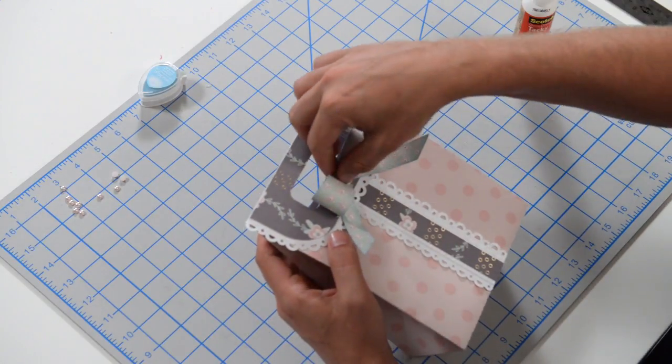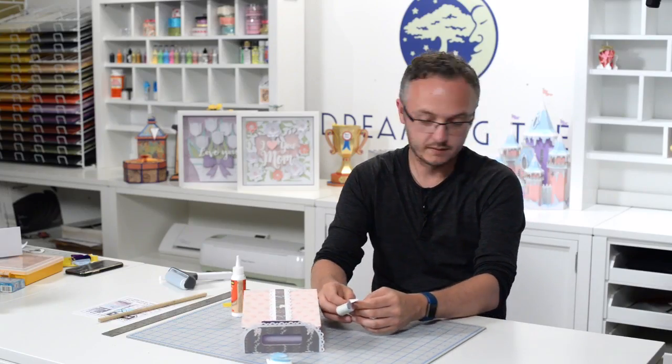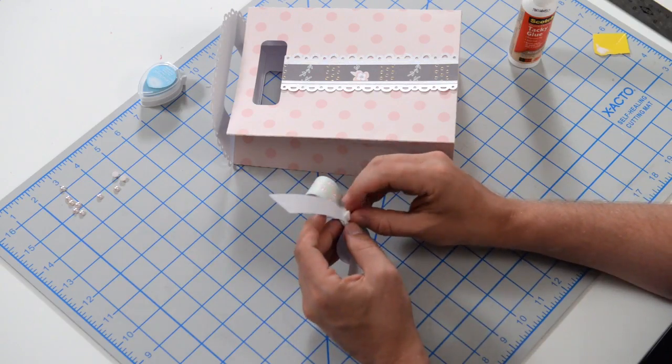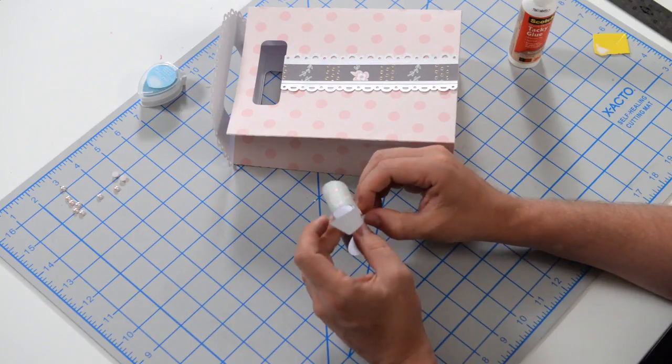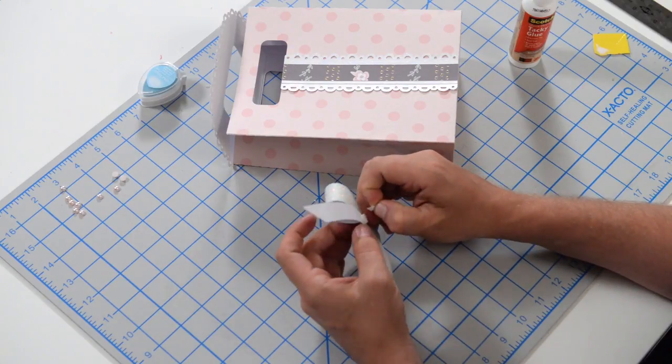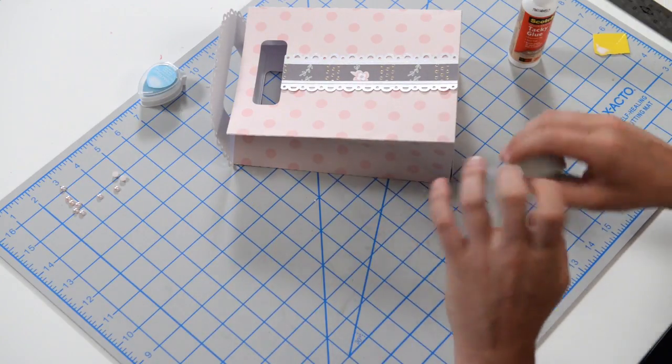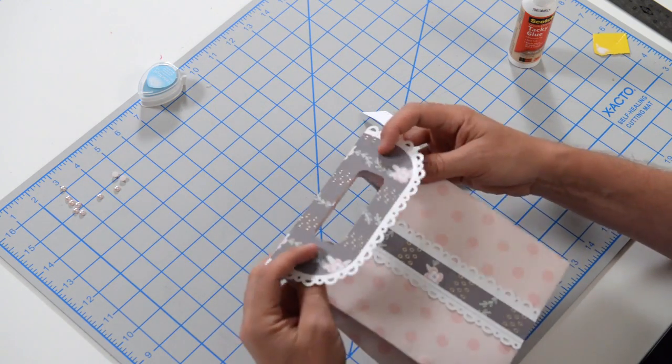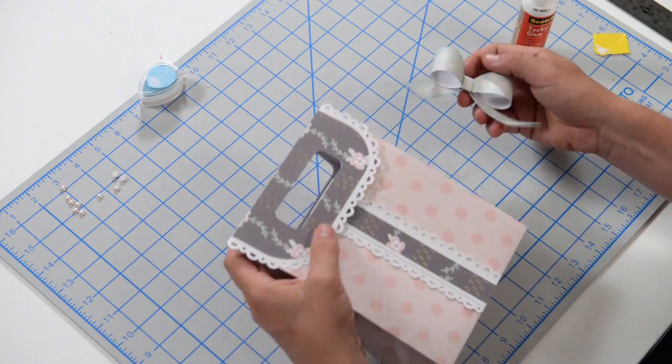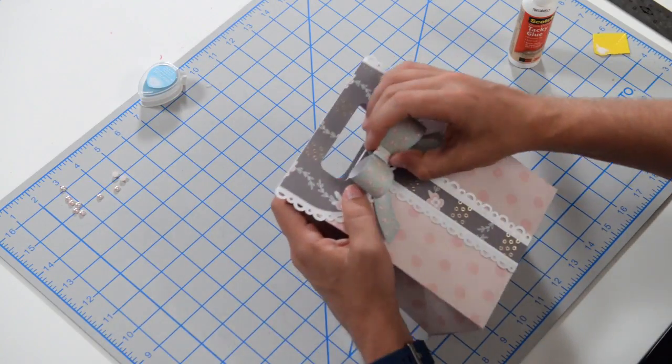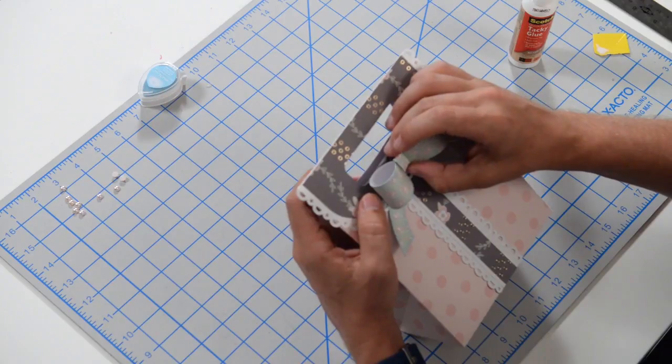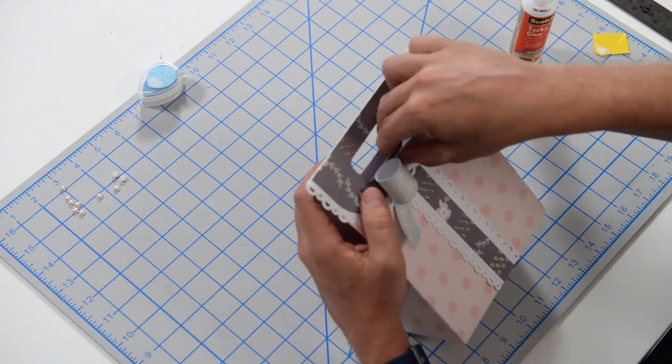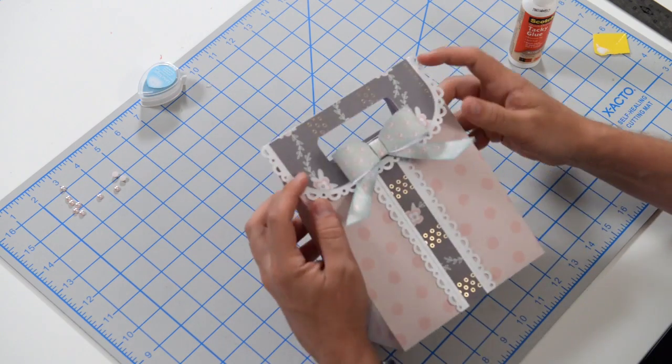You can either pop dot that or glue it down. I'm going to use a little foam square here. You can use a pop dot. You can glue it down. You can hot glue it down. Whatever floats your boat will work just fine. Let me give this a little added dimension with a foam square. Let me just get that on there real quick and then I'll show you. I want to make sure that I get it nice and centered. There we go. Very cute.